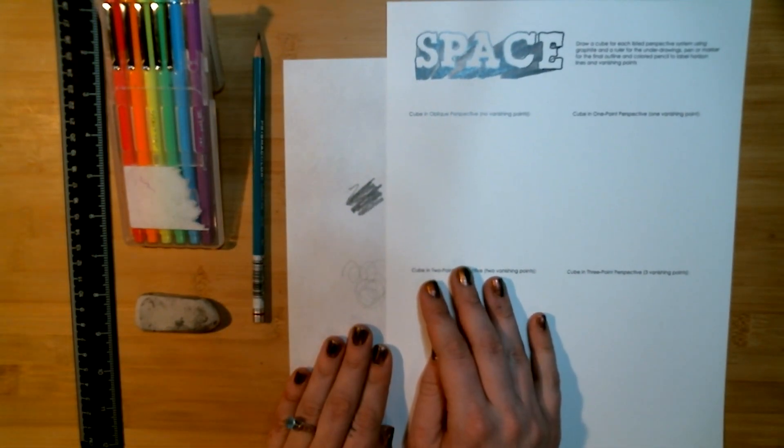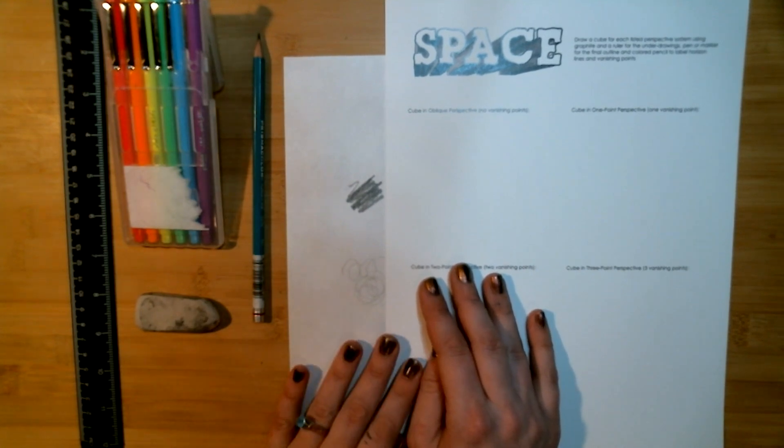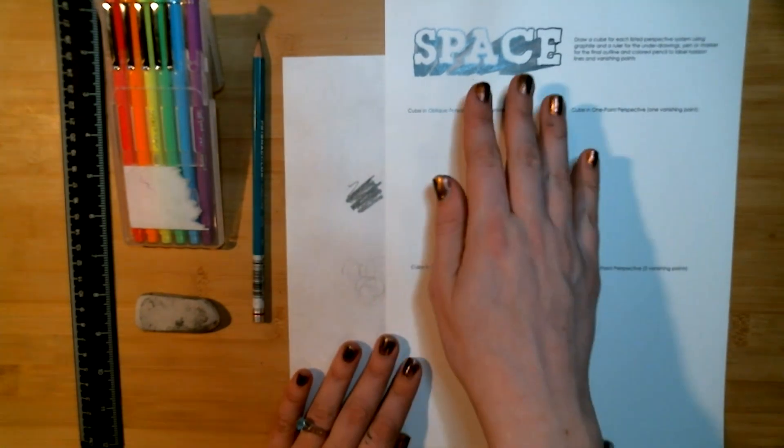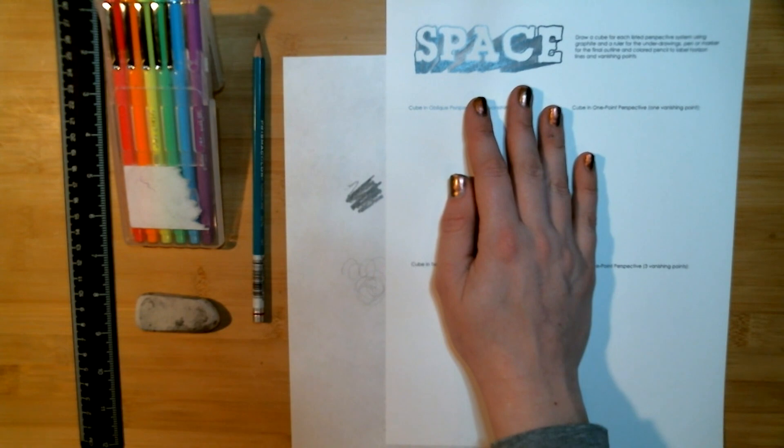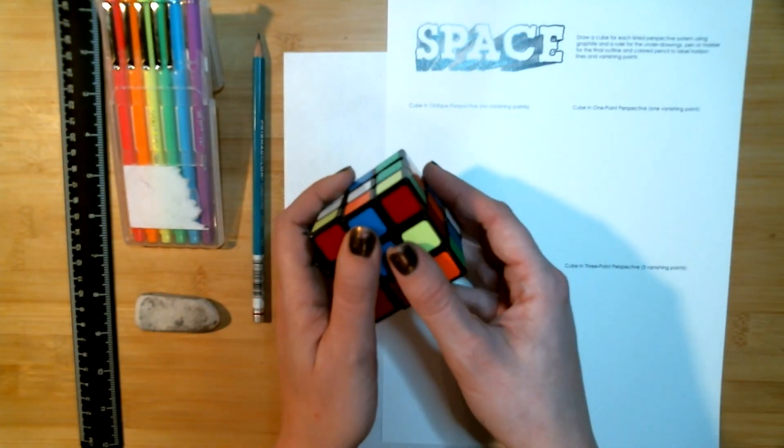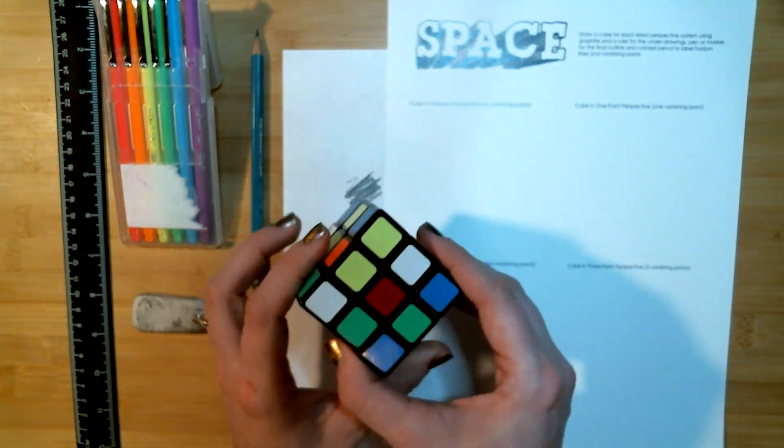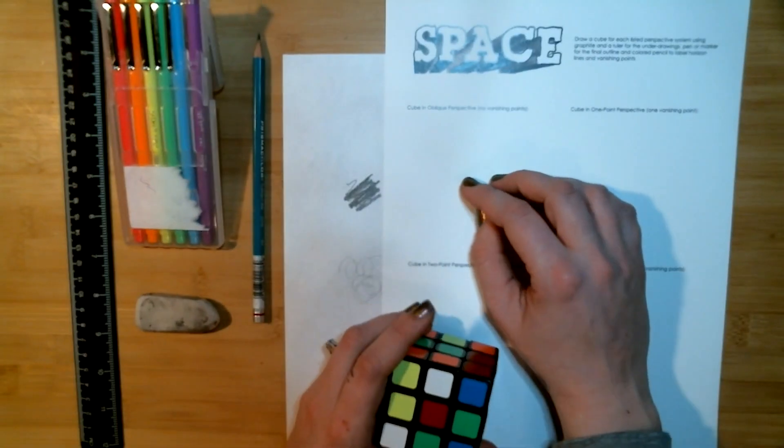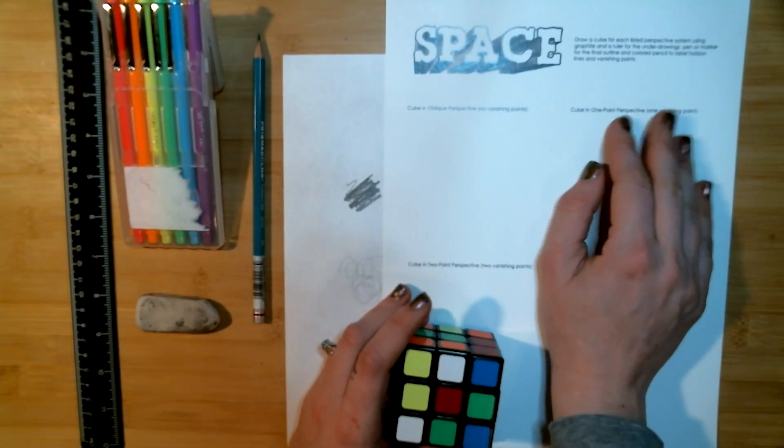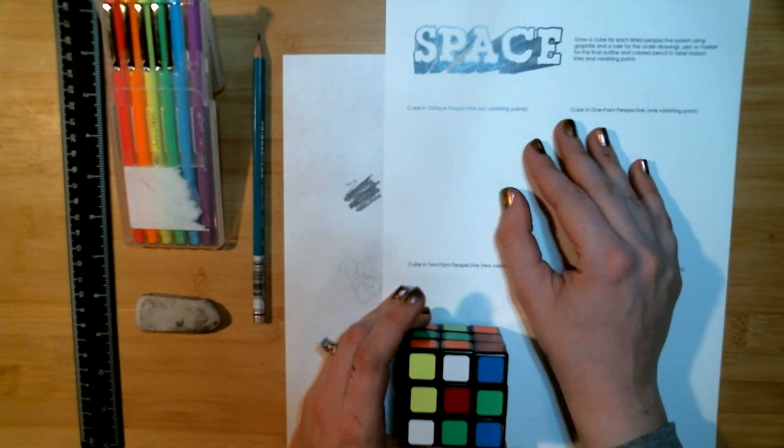Today's video is going to be on the element of art of space, or depicting three-dimensional objects on a two-dimensional surface using the conventions of perspective for today's worksheet.